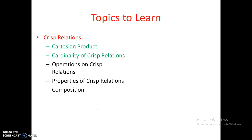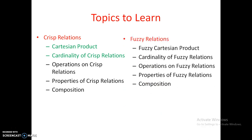The topics to be learned: in this video I'd like to discuss only Cartesian product and cardinality of crisp relations. In the other video we will see operations on crisp relations, properties on crisp relations, and composition. The operations and properties are approximately the same as classical sets, but composition is something different and needs to be learned separately. Then we move to fuzzy relations.